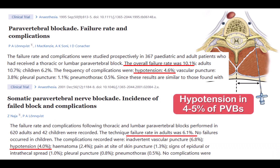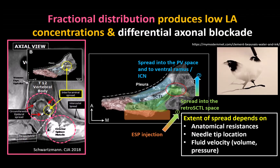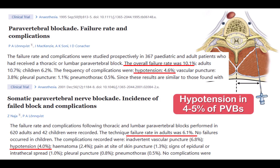Fractional distribution can be both a limitation and a strength of the ESP block. For example, the fact that only a small fraction reaches the epidural space and sympathetic chain explains the very low incidence of hemodynamic instability seen with the ESP block as compared to a paravertebral block.